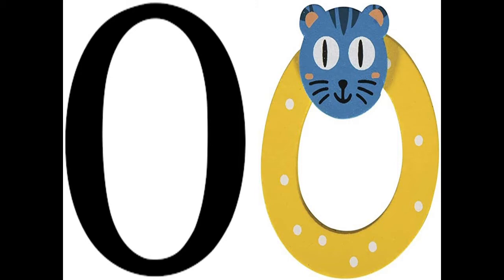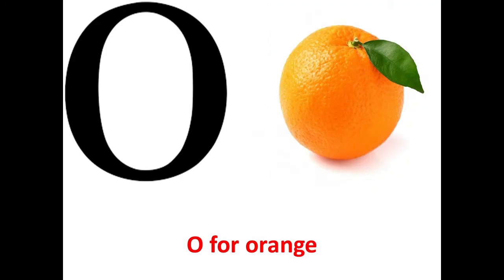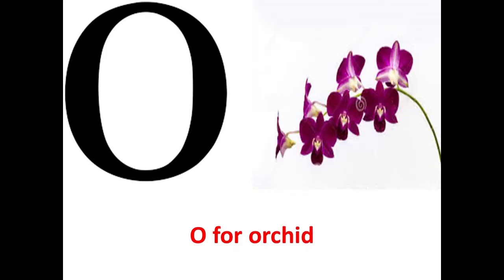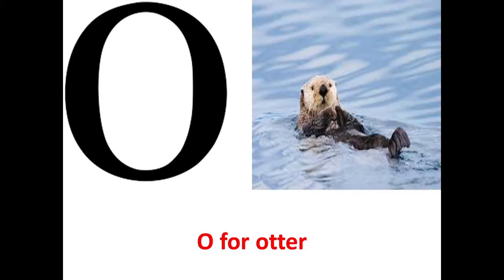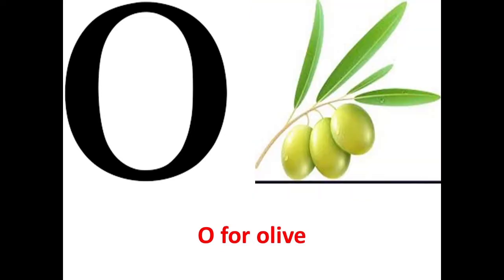O says o. O for ostrich, o for orange, o for onion, o for orchid, o for octopus, o for otter, o for olive. These were a few things that begin with letter o.